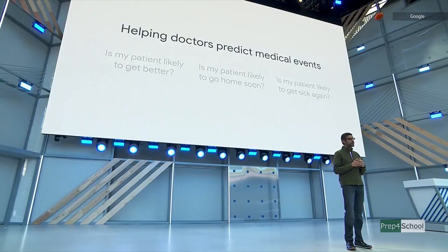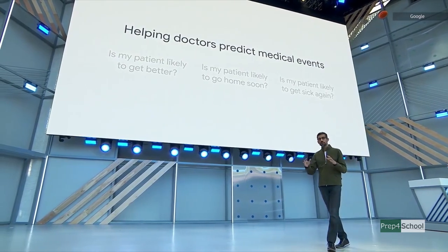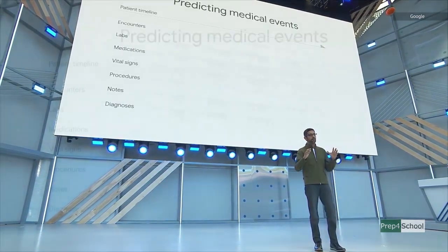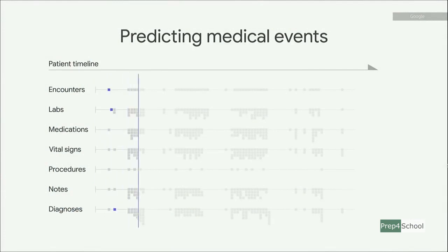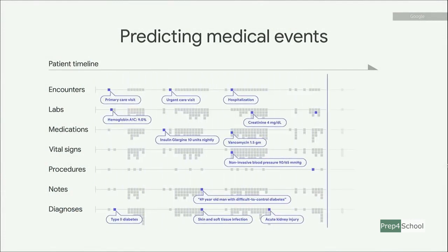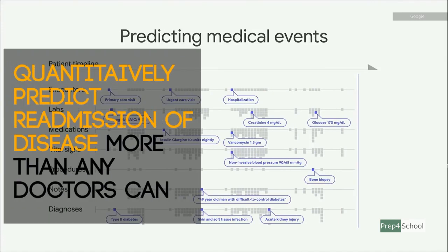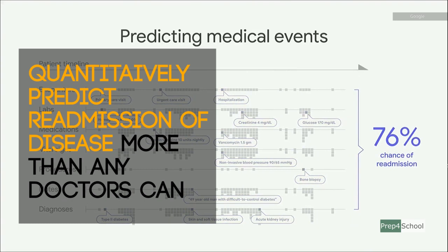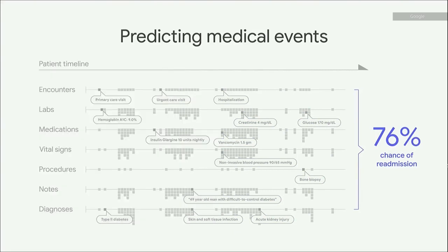Another area where AI can help is to actually help doctors predict medical events. We've put our machine learning systems to work, using de-identified medical records with our partners. If you analyze over 100,000 data points per patient — more than any single doctor could analyze — we can actually quantitatively predict the chance of readmission 24 to 48 hours before, earlier than traditional methods. It gives doctors more time to act.